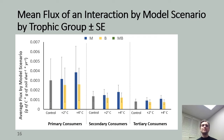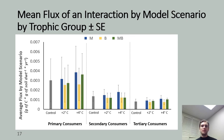Adding our B model scenario shown in yellow, flux at the level of the population also tends to be greatest in our highest order trophic groupings and least in our lowest order trophic groupings. Consistent with trends in total system flux, flux within each trophic grouping decreases with temperature, which makes sense given we expect some populations to increase under warming and others to decrease. Finally, adding our MB model scenario shown in green, flux at the level of the community also tends to be greatest in our highest order trophic groupings. Consistent with total system flux trends, flux within each trophic grouping decreases with temperature, which makes sense given our soil community is comprised of populations of individuals.